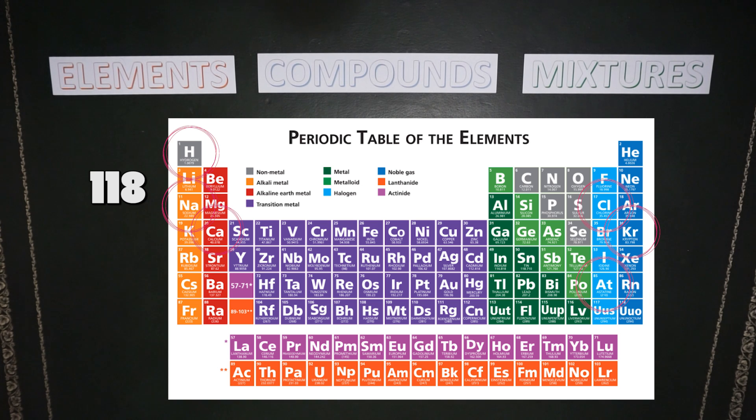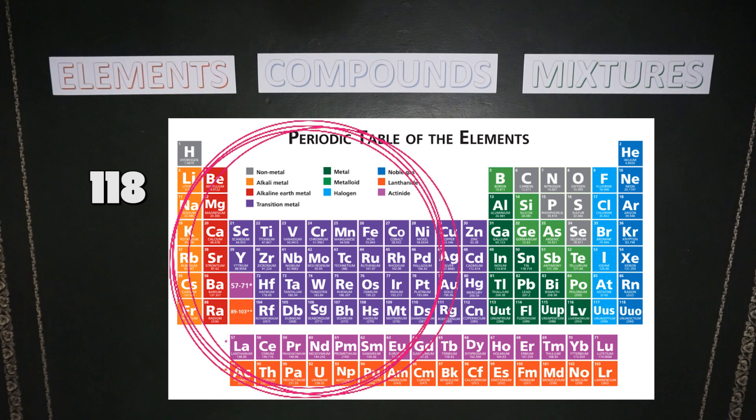Based on its position within the periodic table, we can actually determine a fair bit about that element. For example, all of the metals tend to be grouped together and all the non-metals tend to be grouped together.